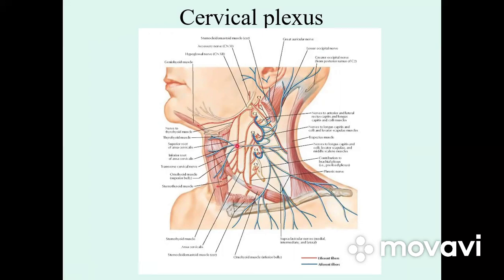The transverse cervical nerve, nervus transversus colli, arises like the preceding two nerves from the middle of the posterior edge of the sternocleidomastoid muscle, divides into branches which curve around the posterior edge of the sternocleidomastoid muscle, pass over its external surface forward and downward under the platysma muscle, and innervates the skin of the neck.